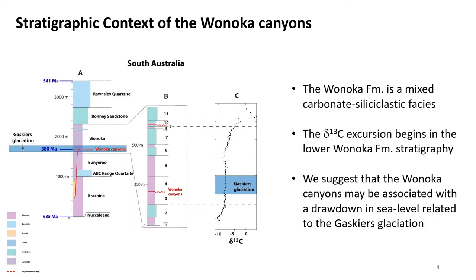Here I show the timing and stratigraphic context of the Wanaka paleo canyons. In part A I show the Ediacaran stratigraphy in the Flinders Ranges with our hypothesized location of the Gaskiers glaciation at 580 Ma. In part B I show the Wanaka formation subdivided into two units as by Hanes 1987. In part C I show the carbon isotope values as measured by Husson 2014 for the Wanaka formation.